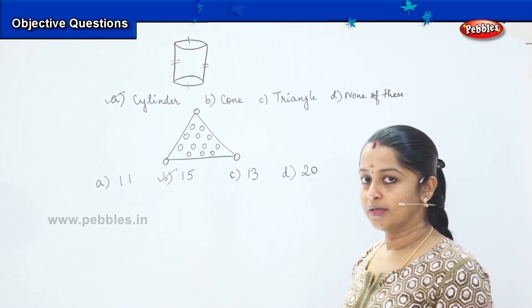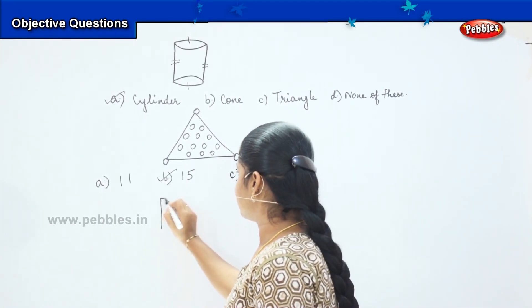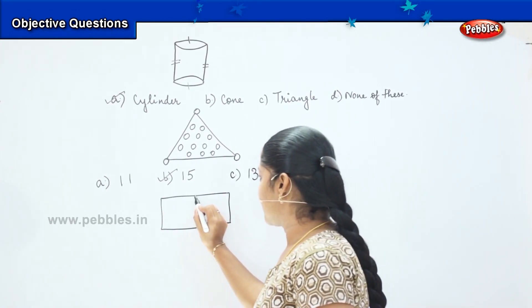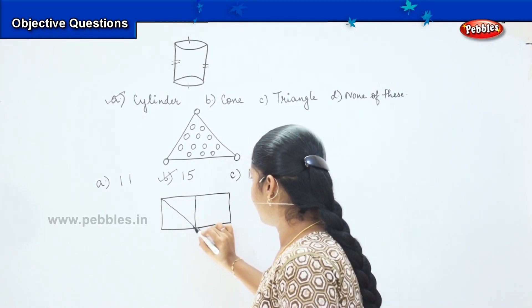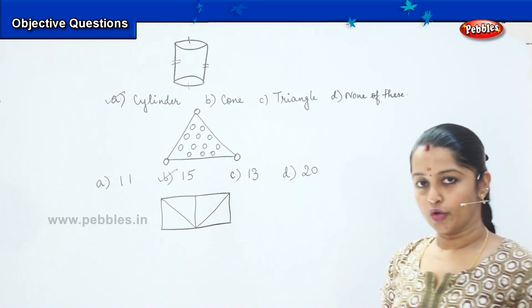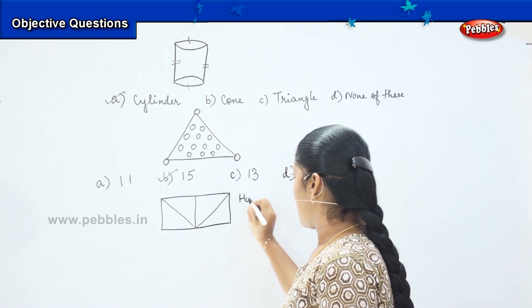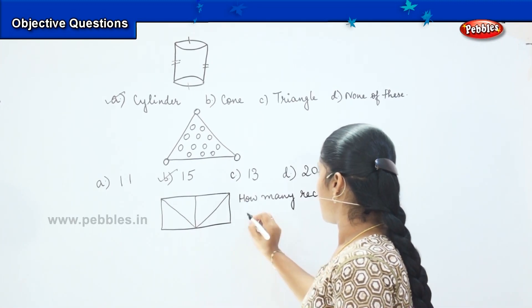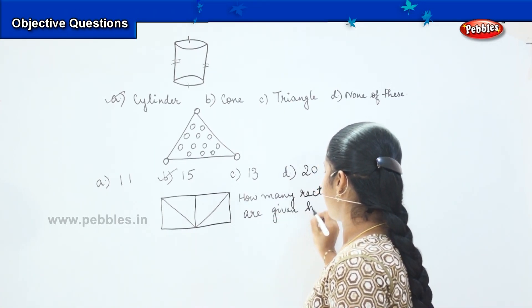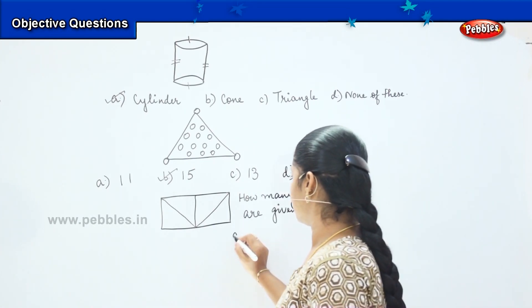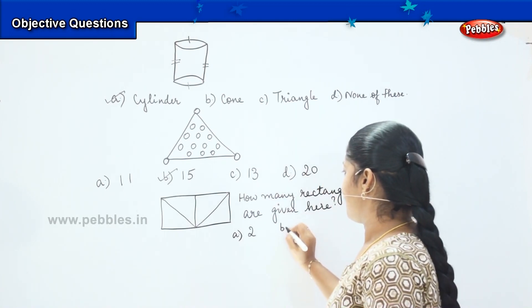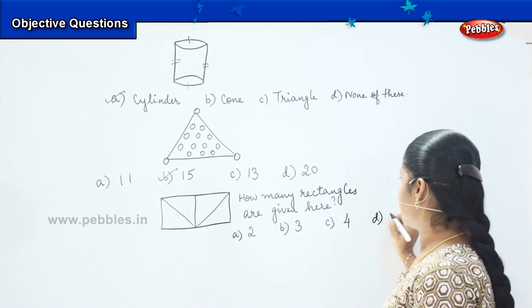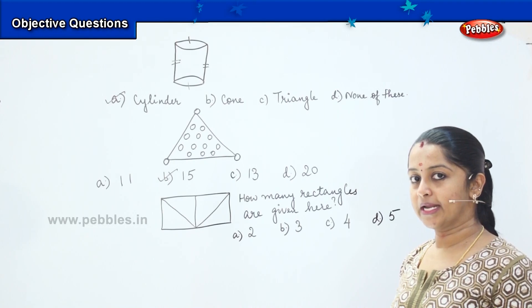Shall we move to the next question? So here is your next question. Now this is the next figure I am going to draw for you. What shape is this? It is a rectangle. The diagram is still not over. So your first question is: how many rectangles are given here? Your options are A: 2, B: 3, C: 4, and D: 5. Shall we count the number of rectangles given in this picture?